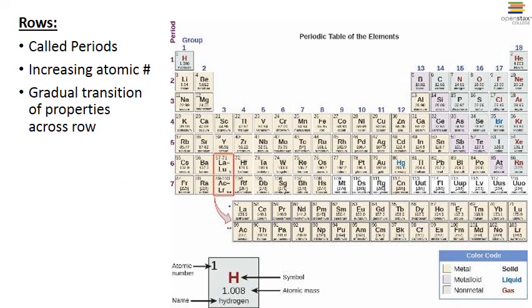When we refer to the periodic table, we usually call the rows periods. As you go across a row, each element in that row actually increases in atomic number by one. And you see a gradual transition in the properties of those elements across the row. Elements usually have very different properties at the beginning of the period compared to those at the end of the period.